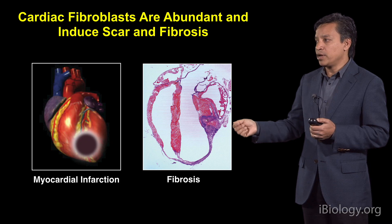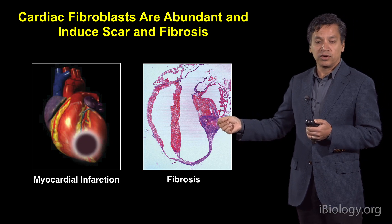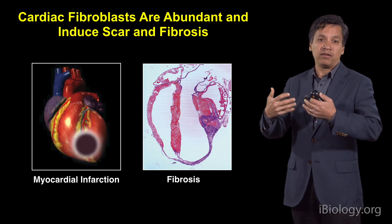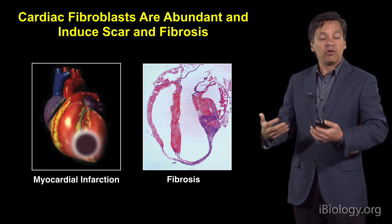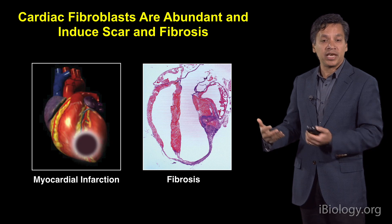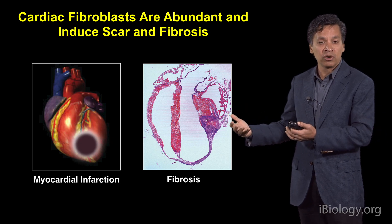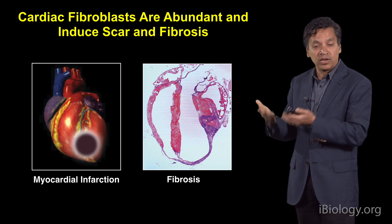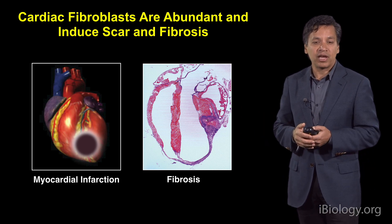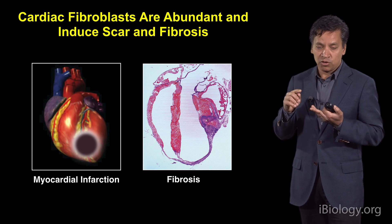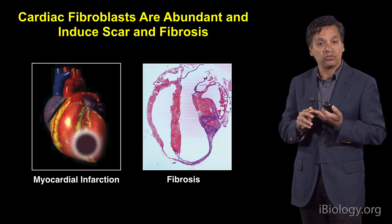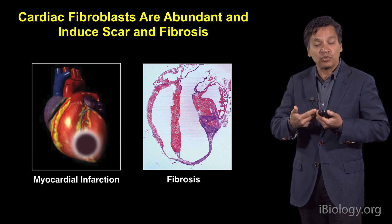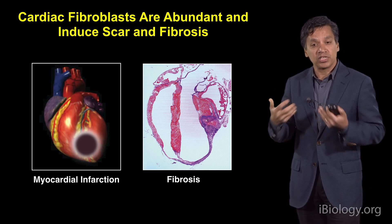Now, if we wanted to repair this heart, you can tell that the fundamental problem is we've lost muscle — we'd want to create new muscle there somehow. We and others are trying approaches to take the beating heart cells from stem cells and somehow inject them into this heart to create new muscle. It's turned out that we've had a lot of trouble in terms of getting those heart cells to stick and persist, and even if we do that, to get them to electrically connect with their neighbors so they can beat in synchrony.